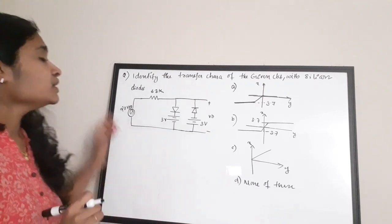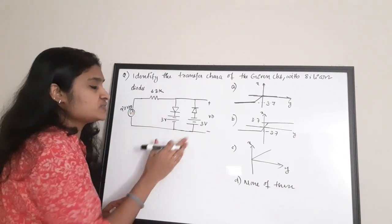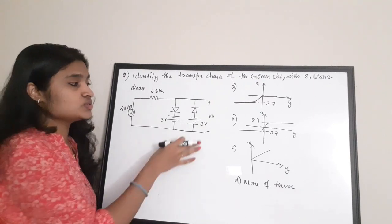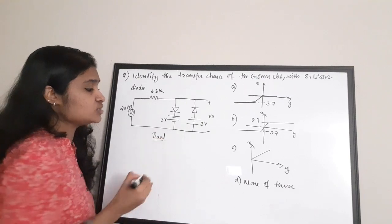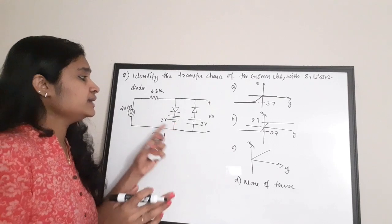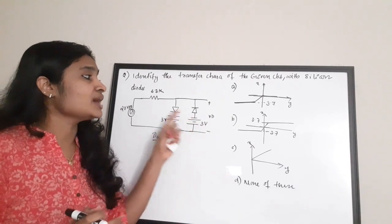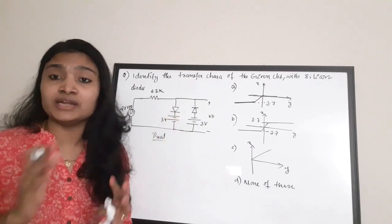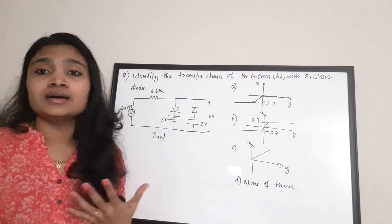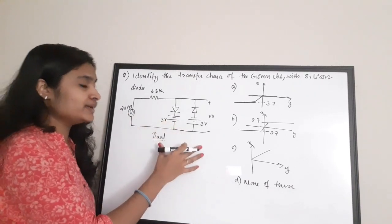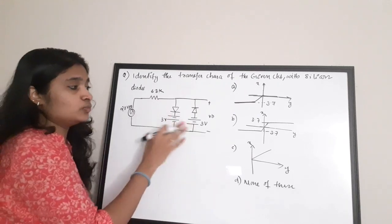The first question: identify the transfer characteristics of the given circuit with silicon diodes. This type of circuit is called a dual clipper. A dual clipper is used for clipping of both the positive half cycle and the negative half cycle, including a bias voltage for each. Since the diodes are connected in parallel, this is a shunt type clipper.